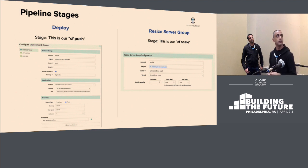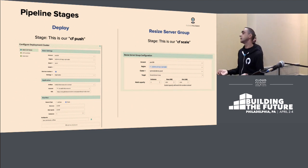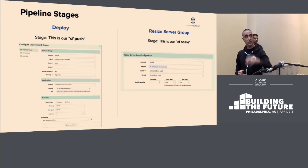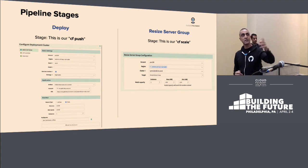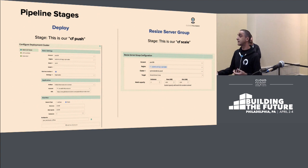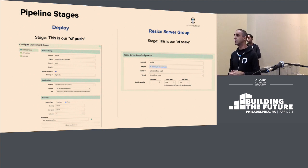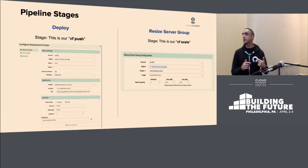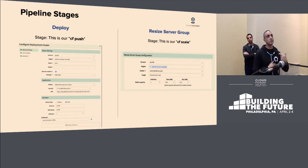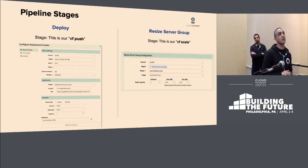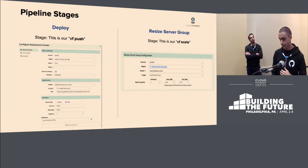A deploy is a CF push. When I select the resize server group stage, I get the ability to change the number of instances, maybe the memory, maybe the disk. As a result, I can make these changes live within my pipeline.